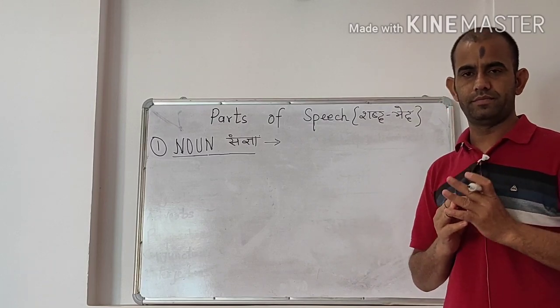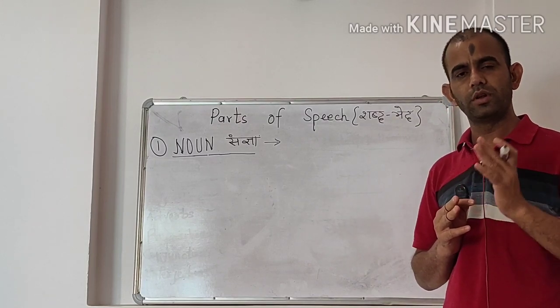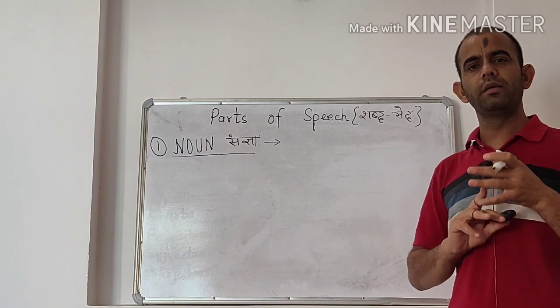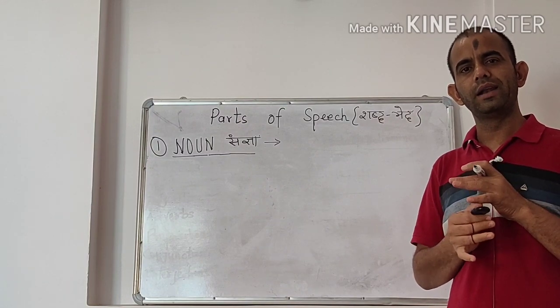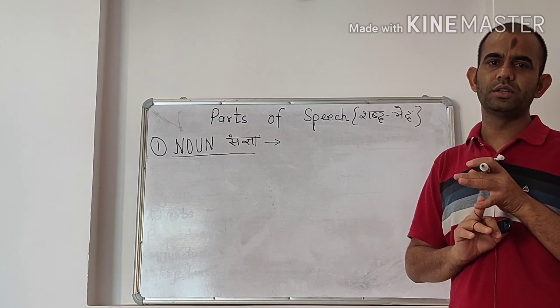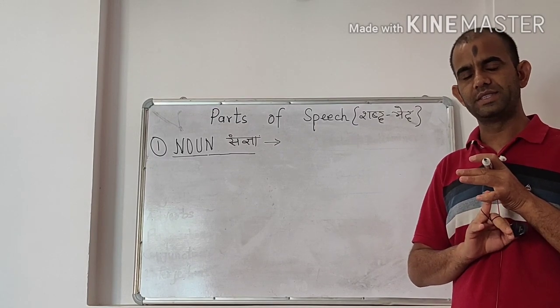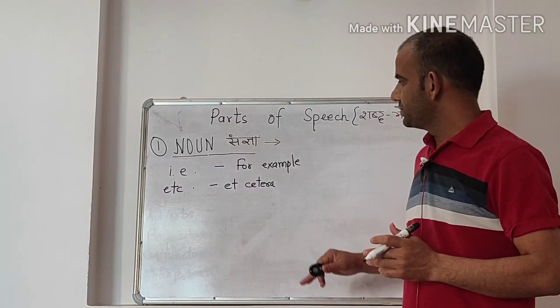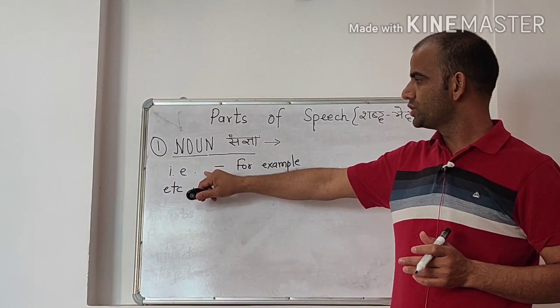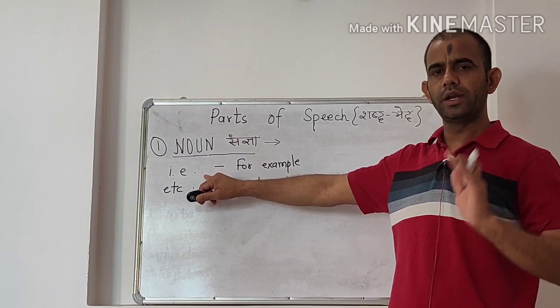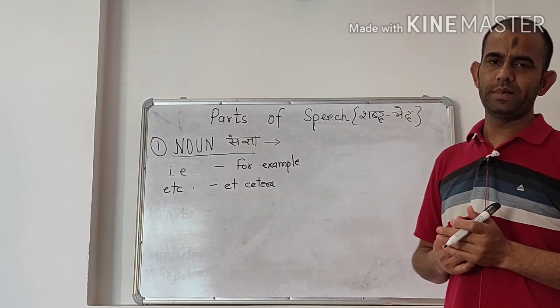Noun is the name of any person, place, thing, animal, quality, state, etc. Two very important abbreviations that are used very commonly in all examples, in all sentences.